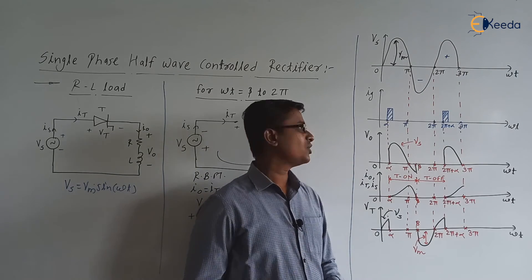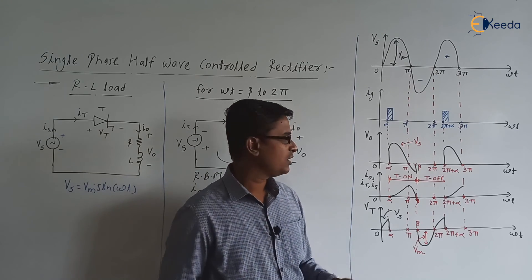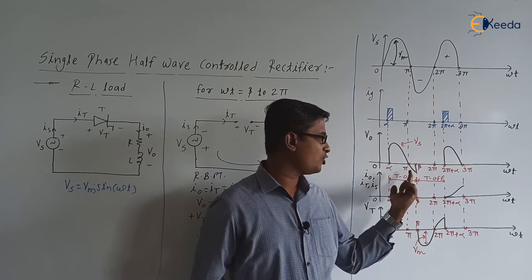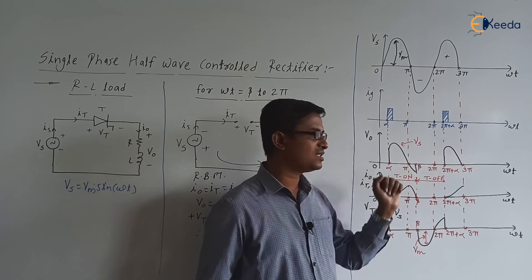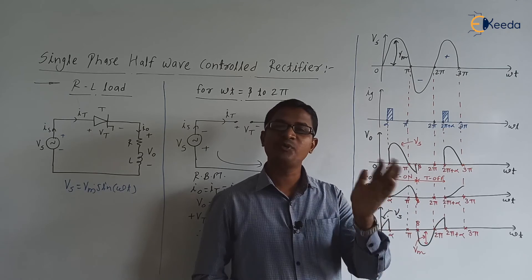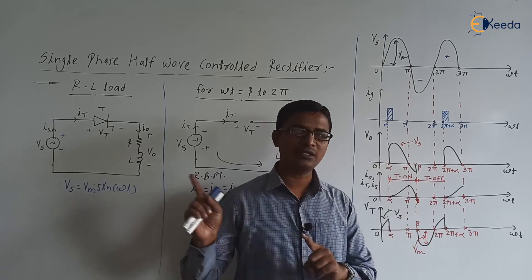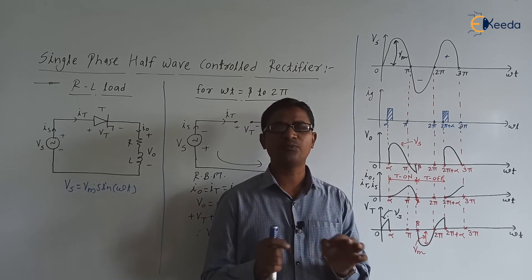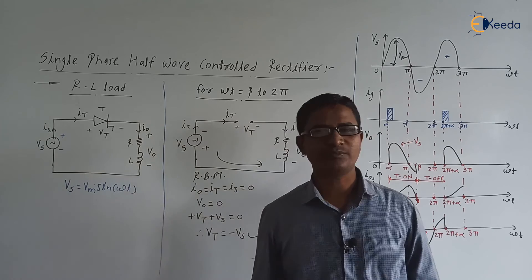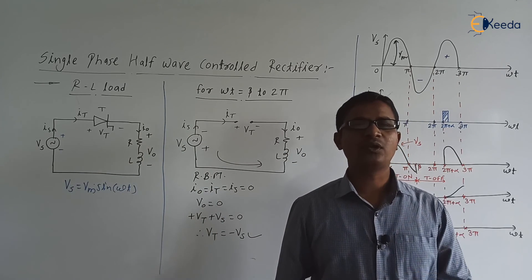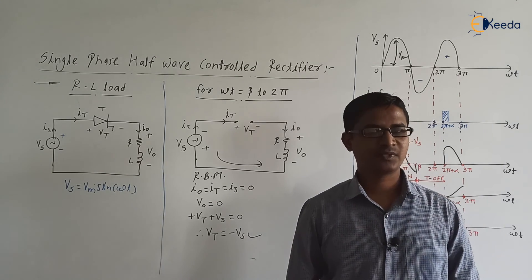If you compare the V₀ waveform in the purely resistive load and V₀ in the RL load, here we have some negative voltage, and this negative pulse causes a decrease in the V₀ average. In the purely resistive load you get a higher V₀ average — this is the drawback of RL load. In order to overcome this drawback, generally we put a freewheeling diode across the RL branch. This completes the circuit operation of single phase half wave controlled rectifier with RL load. In the next video we are going to discuss the expressions of this circuit.